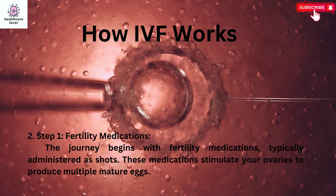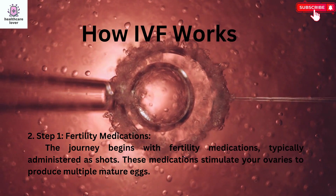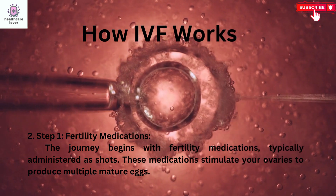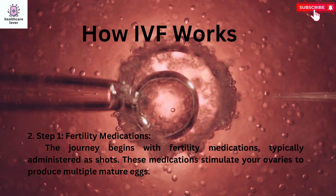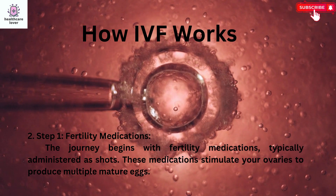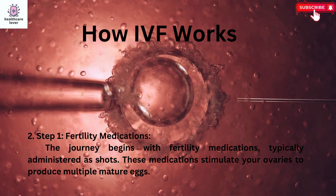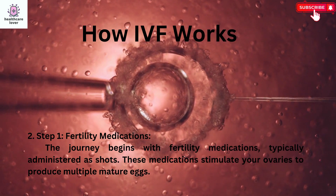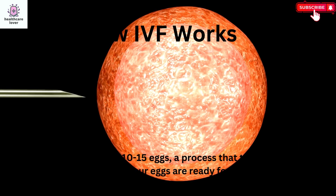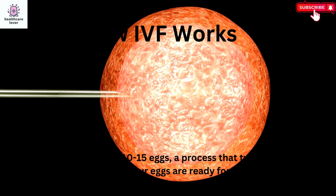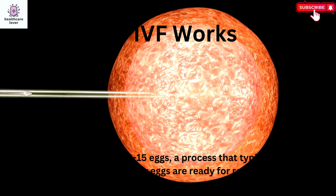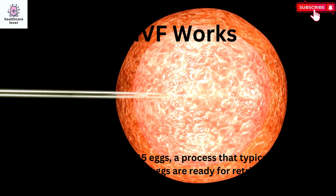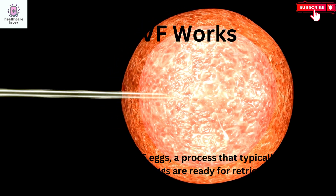Step 1: Fertility Medications. The journey begins with fertility medications, typically administered as shots. These medications stimulate your ovaries to produce multiple eggs. The goal is to harvest 10-15 eggs, a process that typically takes about two weeks until your eggs are ready for retrieval.